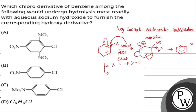Second thing: a negative charge is coming into the ring, so the more electron-withdrawing groups you have, and especially if those EWGs are at the ortho and para positions, the better and faster the reaction will be.